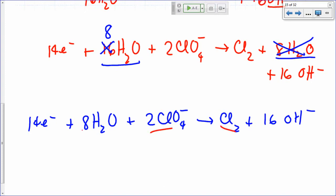Chlorines, you've got 2 on each side. Hydrogens, you have 8 times 2. That's 16. That's 16 hydrogens. Oxygen, you have 8 plus 8. That's 16 oxygens. And you have 16 oxygens right here as well. So it's balanced.